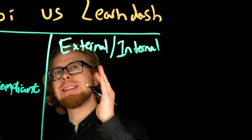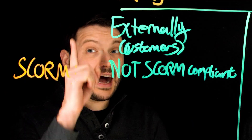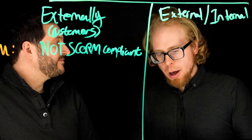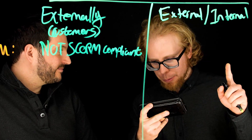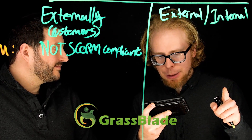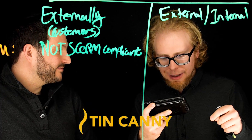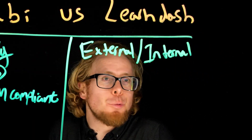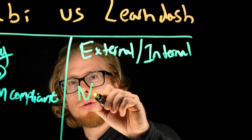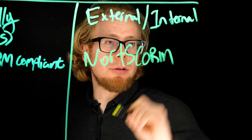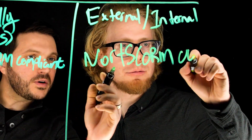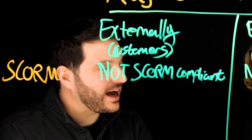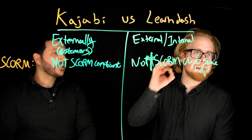LearnDash is very interesting — on its own it is not SCORM compliant, however if you add one of three different add-ons — Grassblade, xAPI Companion, or Tin Canny — LearnDash can become SCORM and xAPI compliant. So with some help, LearnDash is a little better than Kajabi in this area.